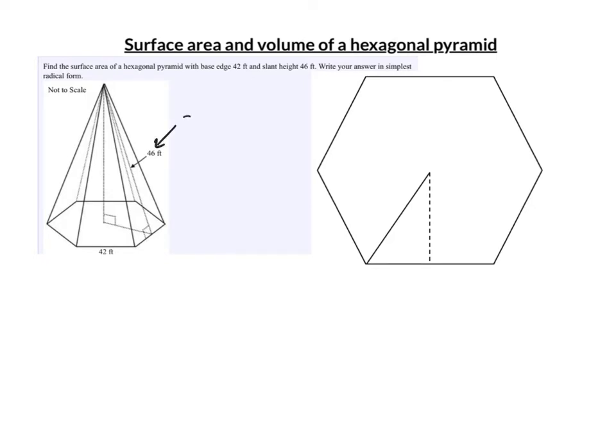Remember 46 is called the slant height. The slant height is the height of one of the triangular faces. Well, the only thing we need to figure out here that's a little tricky is the base area. The base is a hexagon, so let's look at that hexagon. We know that each side is 42, which means this would be half of 42 or 21.